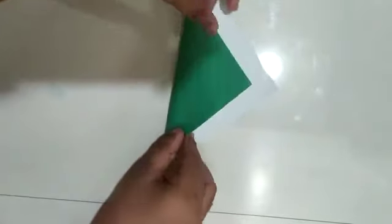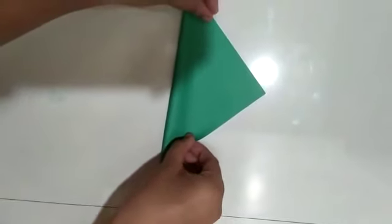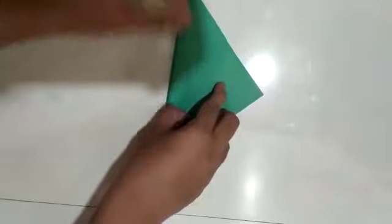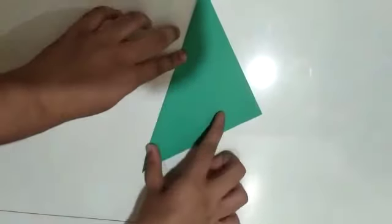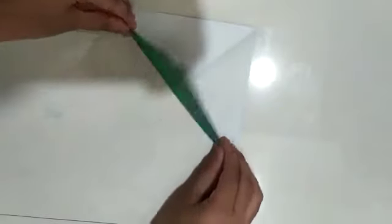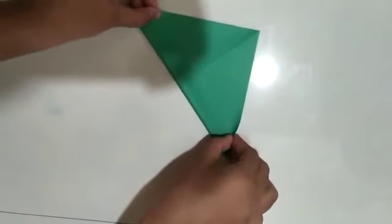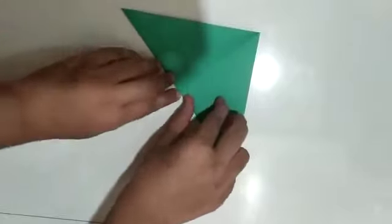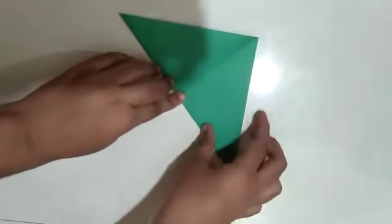Take a square paper as shown in the video. Take the point from left side and fold it at right side. And open it. And repeat the same by taking upper point to lower point. And open it.